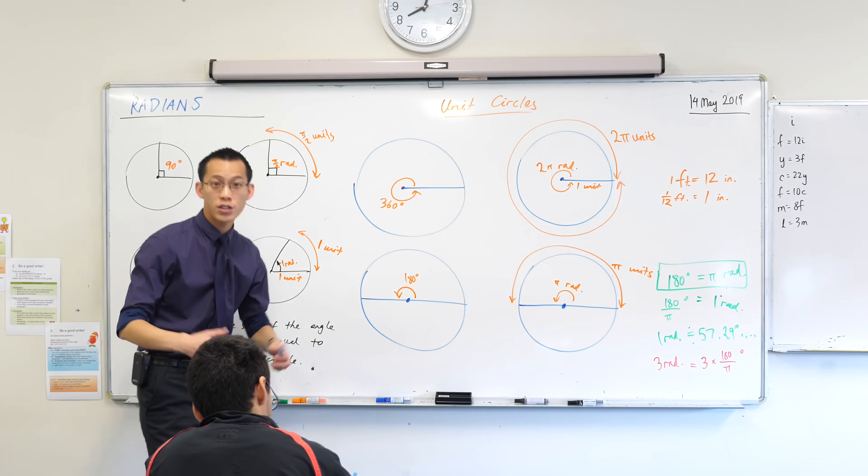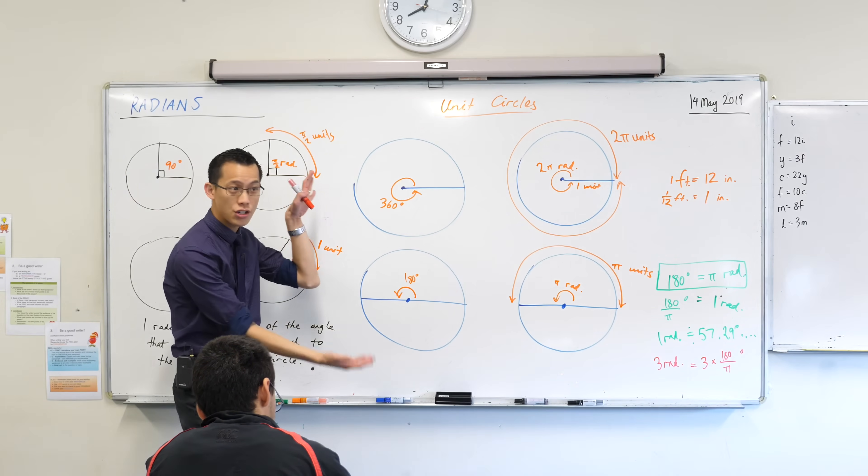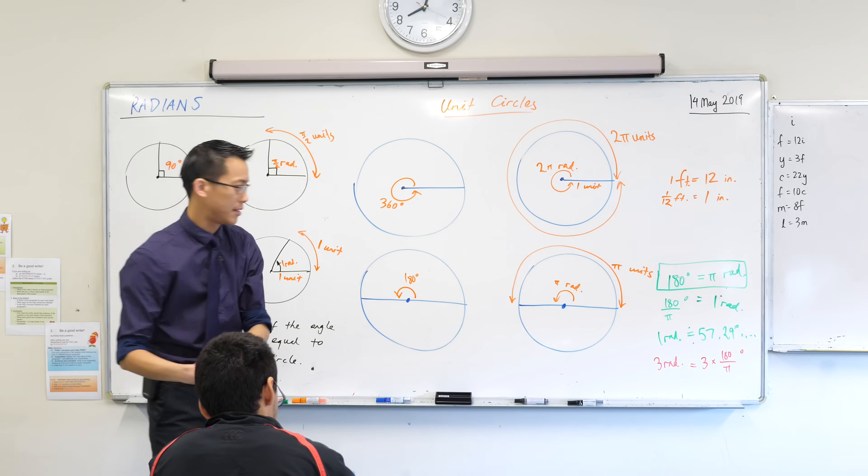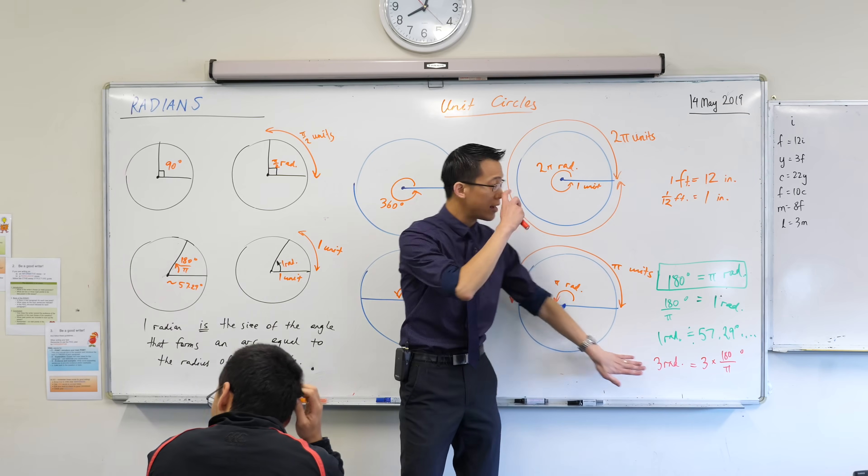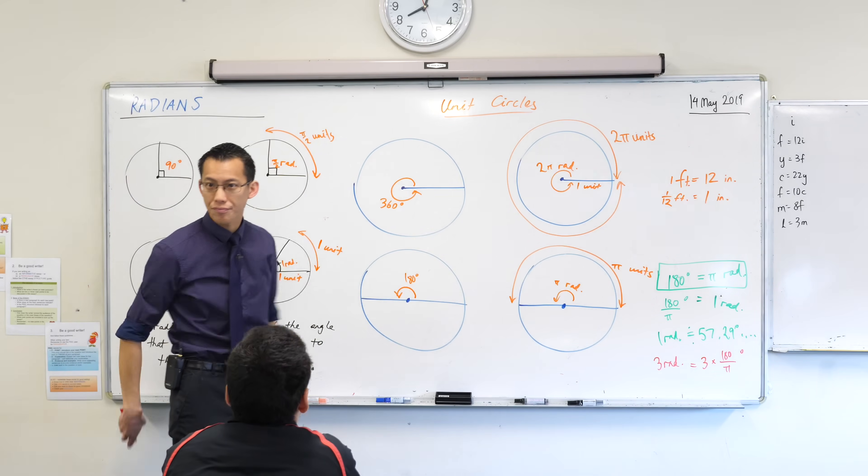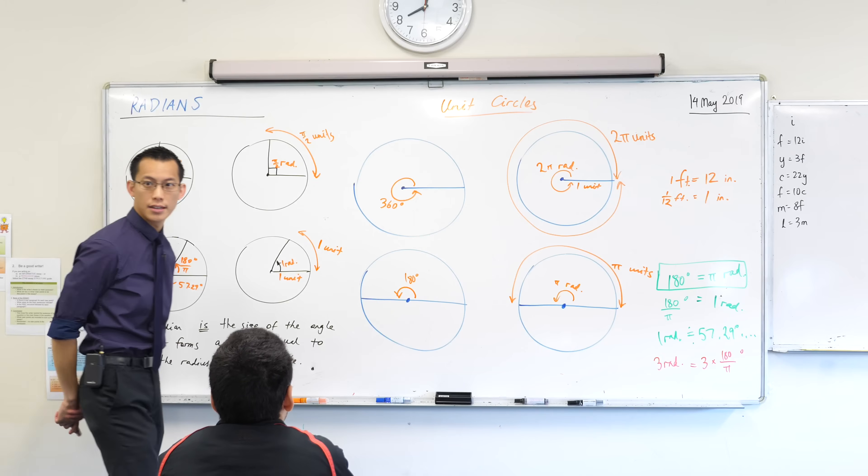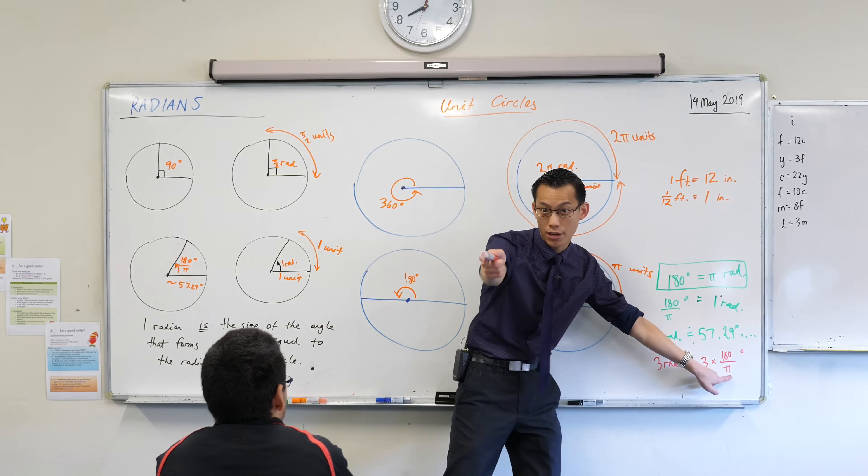170? 171. Now think about that for a second. Think about the diagrams you already have on your page. Does that intuitively make sense? Three radians is just a little bit less than π radians. You see that? So our formula would be, if I want to find a radian, whatever the number of radians times 180 over π. Bingo.